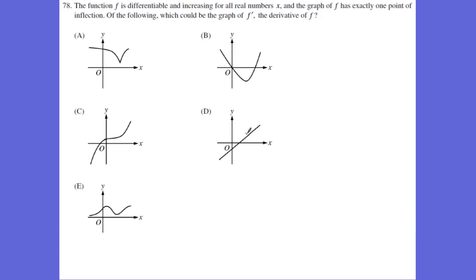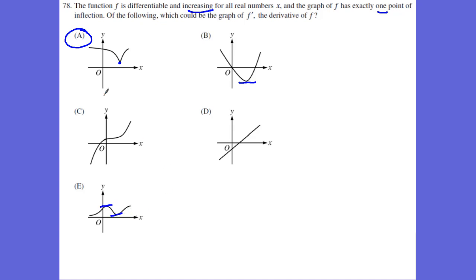For problem 76 or 78, we're looking at calculator problems now. We want a function with only one point of inflection but increasing for all numbers. Answer B has only one point of inflection but has some increasing and decreasing, so our answer is A. A has one point of inflection and a non-differentiability, but all values are positive. Answer E has all values positive but has two possible points of inflection.